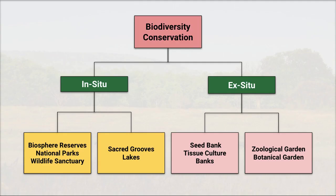First we need to know some background about biodiversity conservation. Basically biodiversity conservation has two major pillars — one is in-situ and another is ex-situ. In in-situ you have protected areas like sacred groves and lakes. Under ex-situ, seed banks, sericulture, zoological gardens and botanical gardens are covered. Today's lecture covers protected areas: Biosphere Reserves, National Parks and Wildlife Sanctuaries.